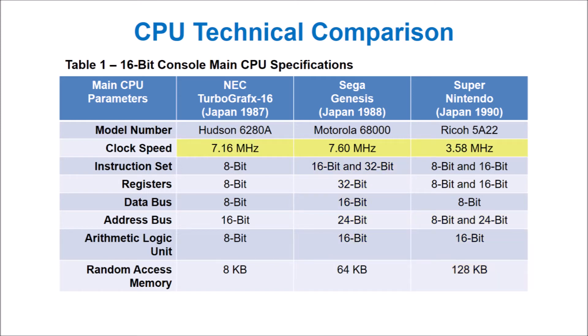The Super Nintendo has a remarkably low clock speed compared to its peers. The clock speed is generally very important for CPU performance, and this may be a limiting factor for the Super Nintendo. The Genesis and Super Nintendo are equal with regards to the address bus as well as the arithmetic logic unit.